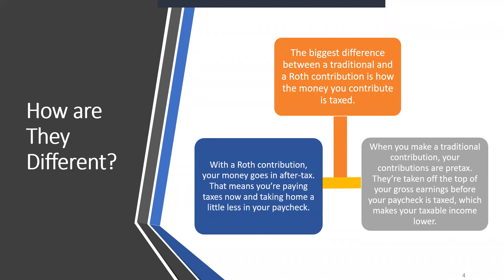The biggest difference between Roth and traditional contributions is how they're taxed. With a Roth contribution, your money goes in after tax, meaning you're paying your taxes now and taking home a little less in each paycheck. When you make a traditional contribution, your contributions are pre-tax — taken out off the top of your gross earnings before your paycheck has been taxed — which means your taxable income has the potential to be lower.